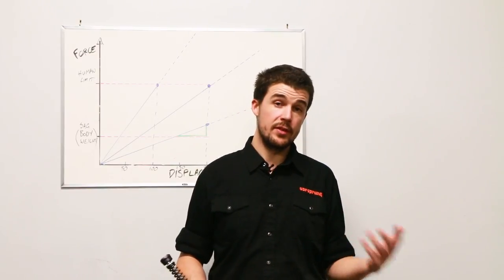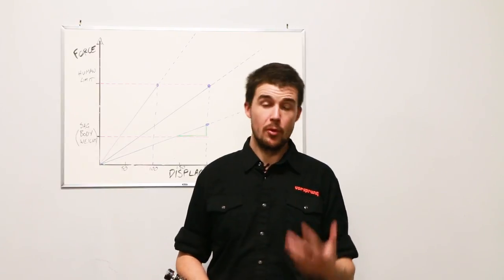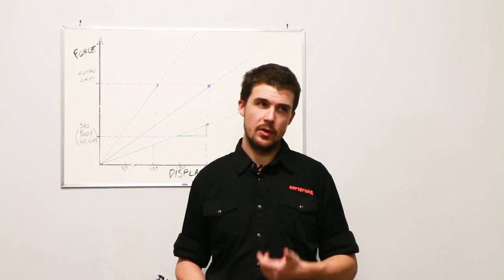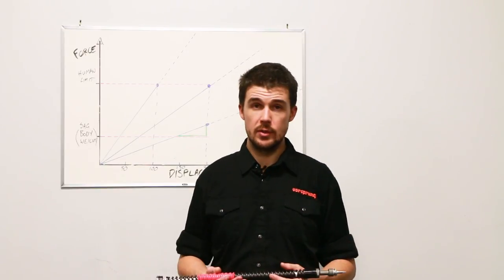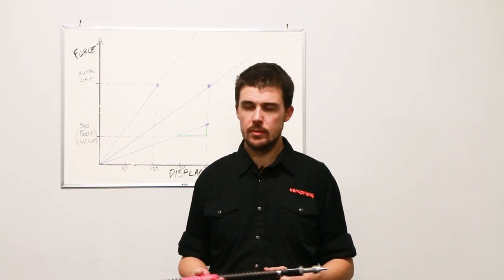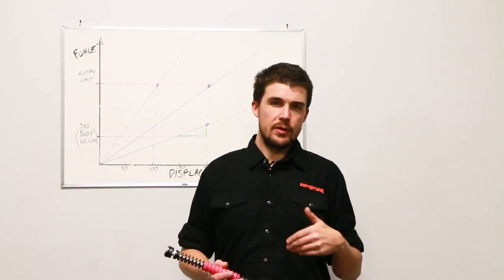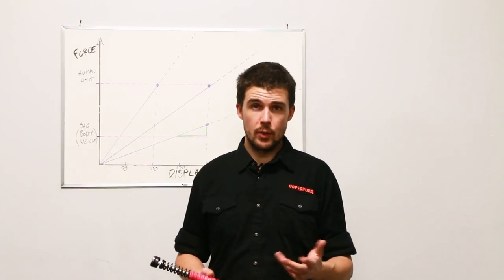So air springs definitely have some advantages there in terms of that end stroke bottoming control, weight, noise, but obvious disadvantages in terms of friction, maintenance, the ability to run enough lubrication in a fork for example. Air springs obviously have some obvious disadvantages in the form of friction, more maintenance, more things to go wrong, you have seals to worry about. Anytime we can eliminate a seal it's a good thing, especially moving ones. They behave differently in terms of their ride height as well.